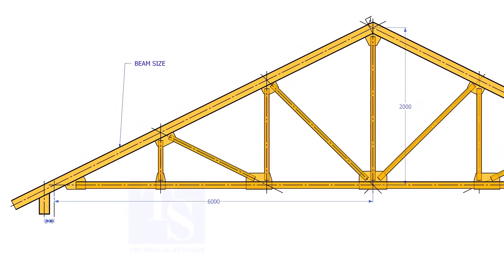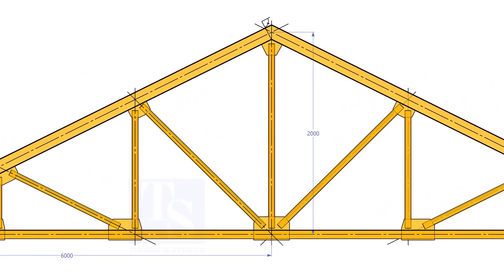Assume that the half span of a truss is 6,000 mm and the height of the truss is 2,000 mm.